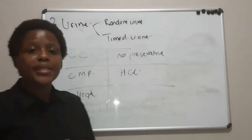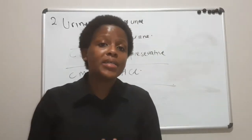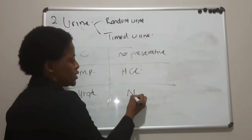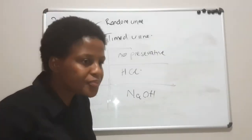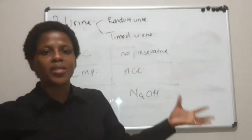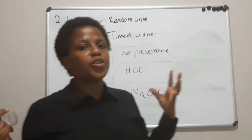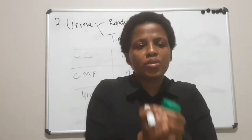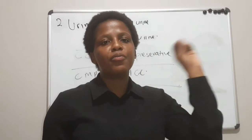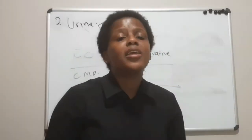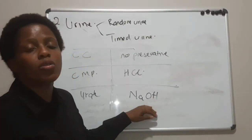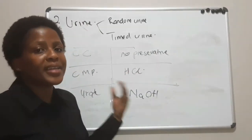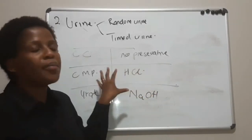Another test that requires a preservative for a timed urine is urate, also called uric acid. For uric acid, the preservative is sodium hydroxide, added at the beginning. CMP and uric acid are common culprits in forming kidney stones because they can come together to form crystals. We want to prevent that from forming in the urine, otherwise we'll get a false low result that could mislead the doctor. It's important to ensure these preservatives are present.